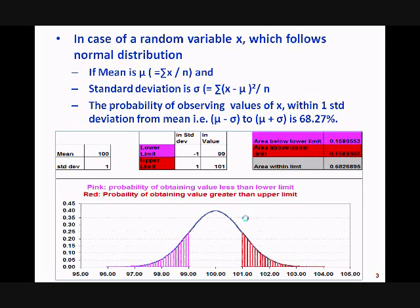The pink-colored area on the left is the area below the lower limit — it gives the probability of obtaining a value less than mu minus sigma. So the probability of obtaining balls with a dimension less than 99 mm (which is 100 minus 1) is 15.86%. Similarly, the area above the upper limit is also 15.86%, because the normal distribution curve is symmetric.